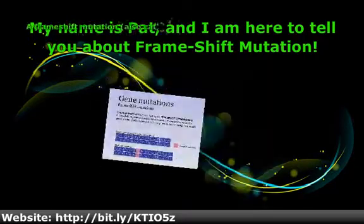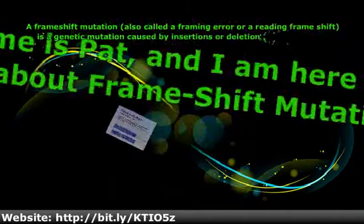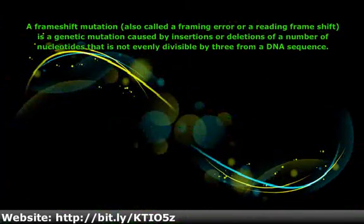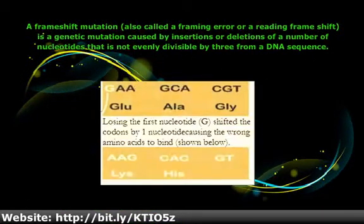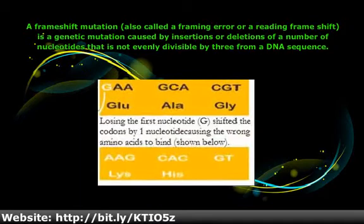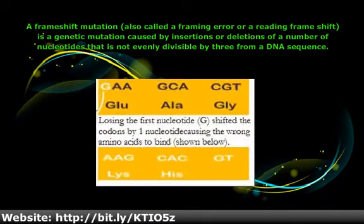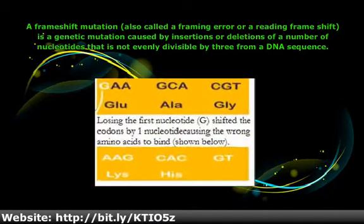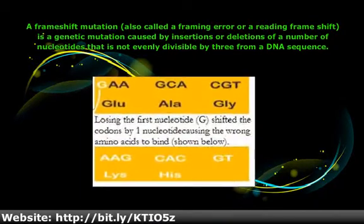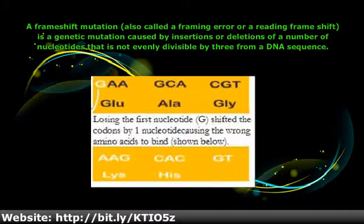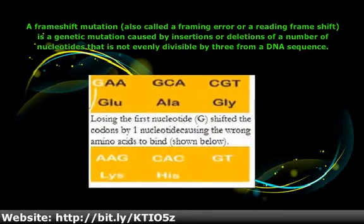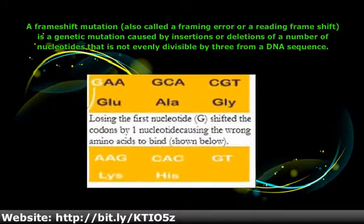A frameshift mutation, also called a framing error or a reading frameshift, is a genetic mutation caused by insertions or deletions of a number of nucleotides that is not evenly divisible by three from a DNA sequence.